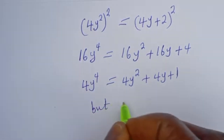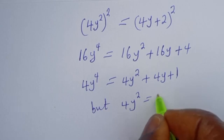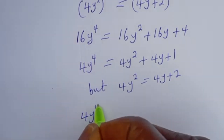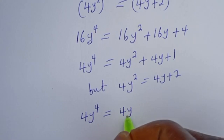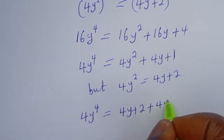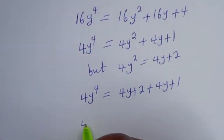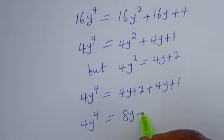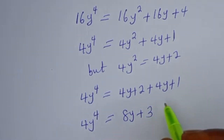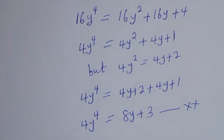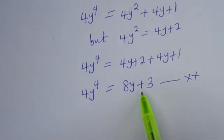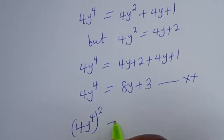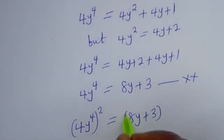But we know that 4y² = 4y + 2, so we can substitute: 4y⁴ = (4y + 2) + 4y + 1, which gives 4y⁴ = 8y + 3. We call this equation star-star. Now let's square both sides of equation double-star: (4y⁴)² = (8y + 3)², giving 16y⁸ = 64y² + 48y + 9.